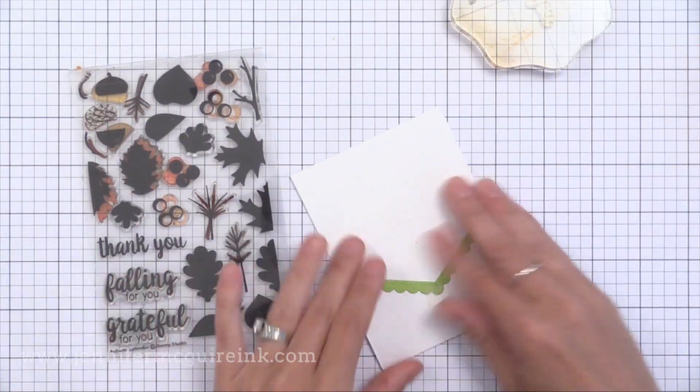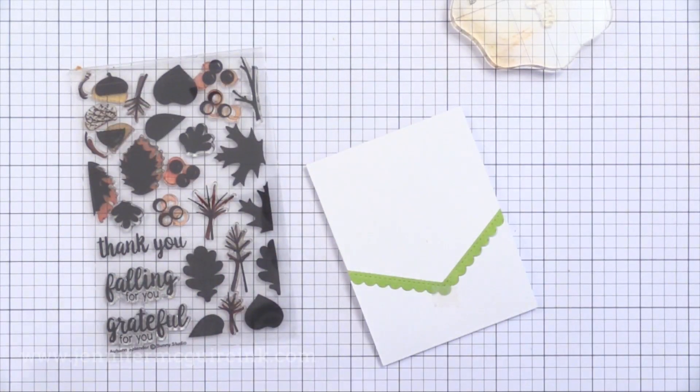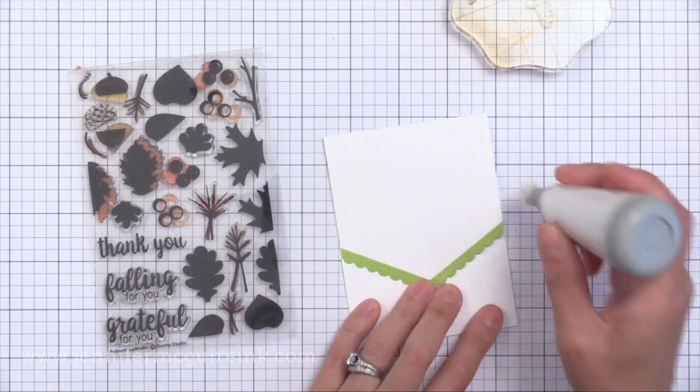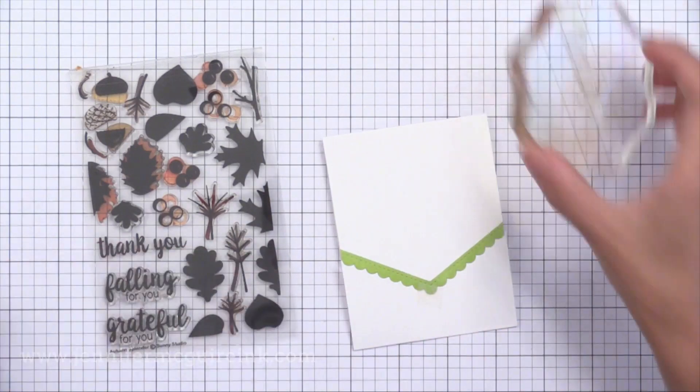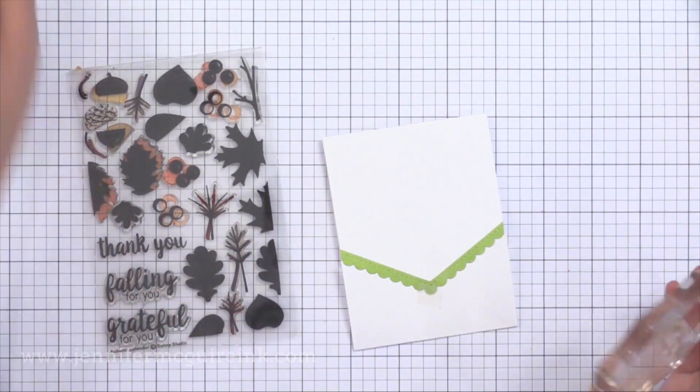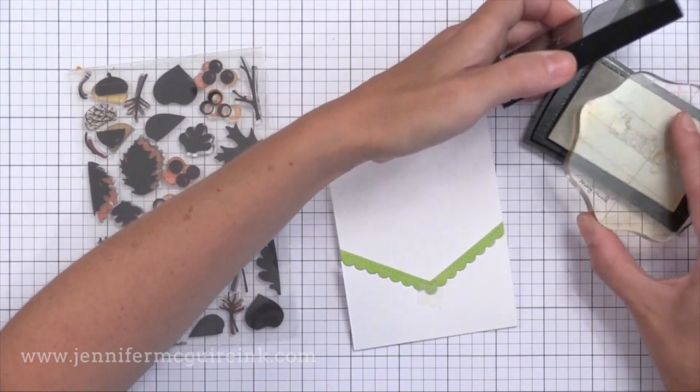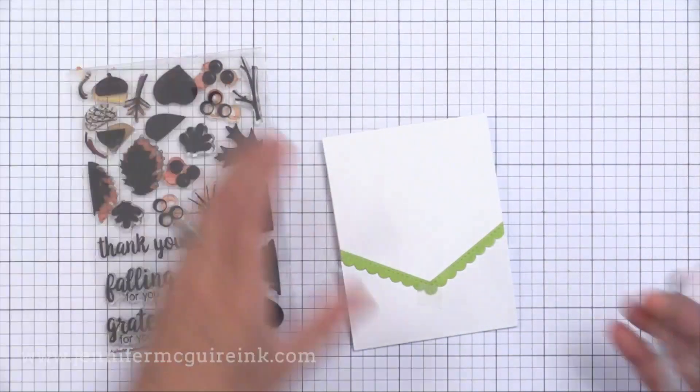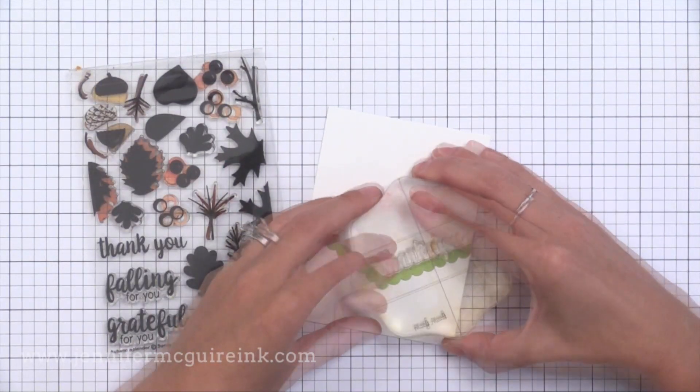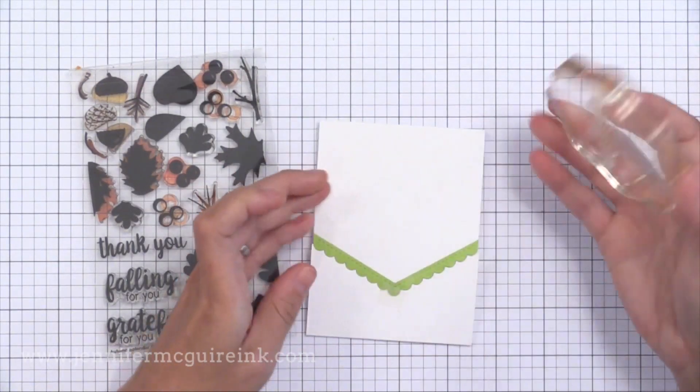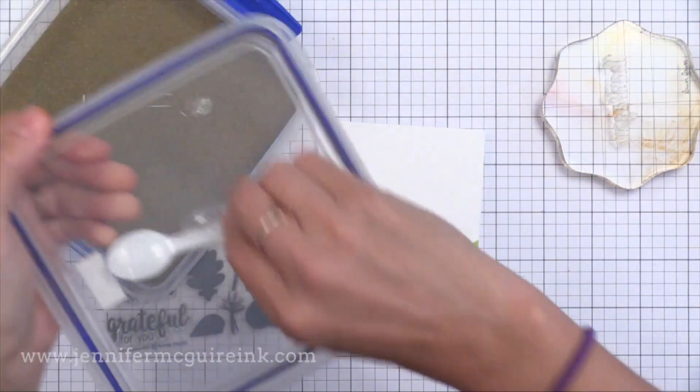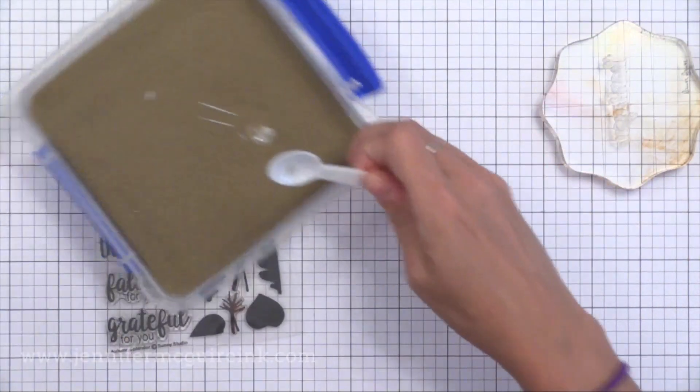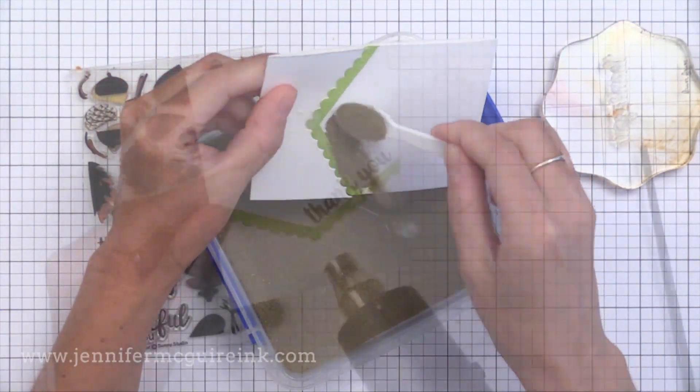So I'm using this new stamp set called Autumn Splendor. This is from Sunny Studios. I've got the thank you greeting from the set. And I want to heat emboss that with gold. So I'm using my anti-static powder tool to rub across there to remove static. And I'm inking up the thank you with VersaMark ink. And I'm going to stamp it along the diagonal there. Actually I've got the stamping kind of overlapping onto the green also. And then I'm going to add Hero Arts gold embossing powder. This is a great gold powder that embosses nice and smooth.